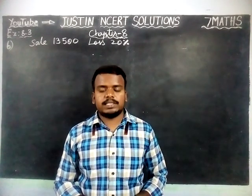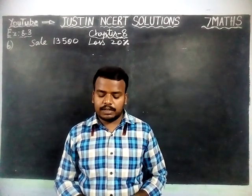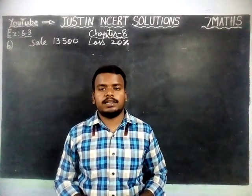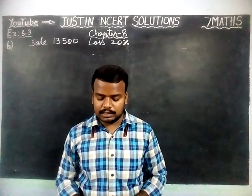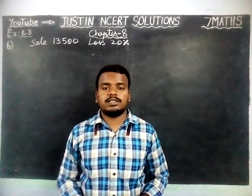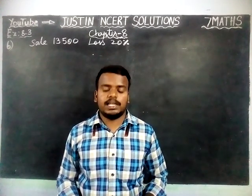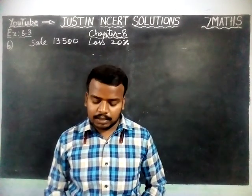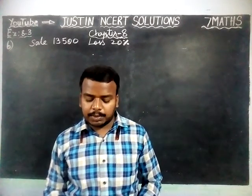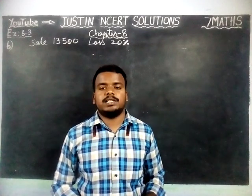Jugi sells a washing machine for Rs. 13,500. She loses 20% in the bargain. What was the price at which she bought it?